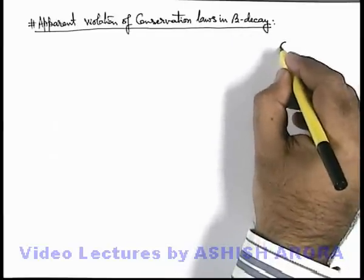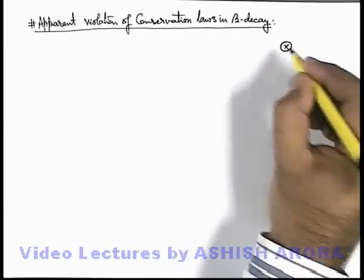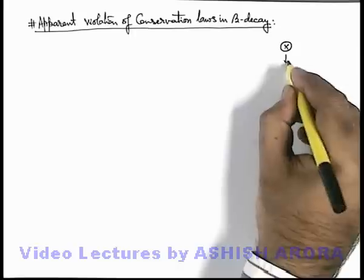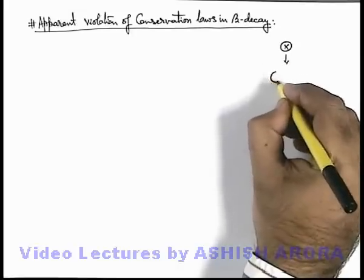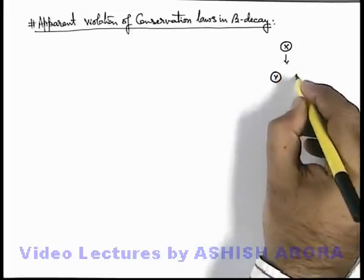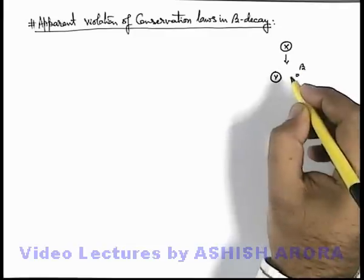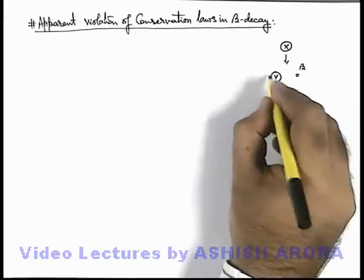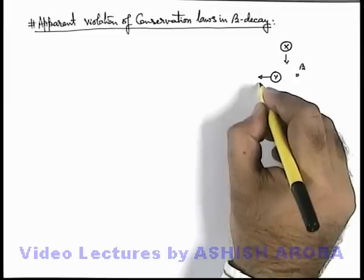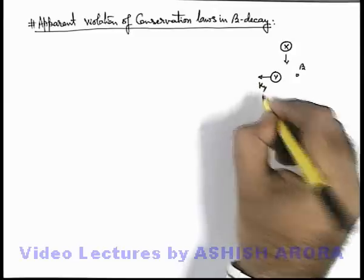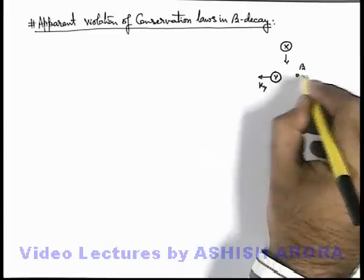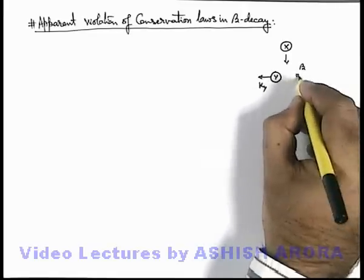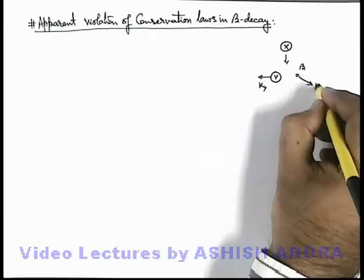When we talk about a beta decay, if there is a parent nucleus X, when it decays to the daughter nucleus Y and a beta particle, it was observed that the very first thing is this Y recoils with some kinetic energy K_Y, and beta particle also carries some energy but not in opposite direction, in some other direction with K_beta.